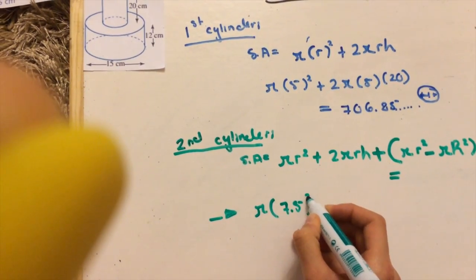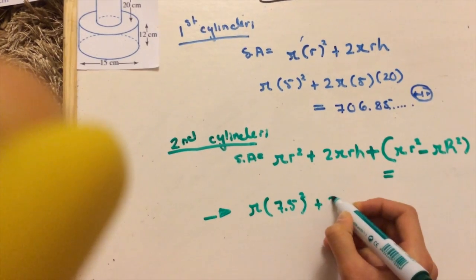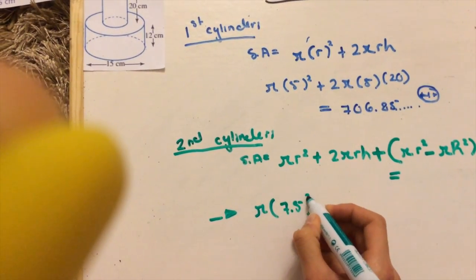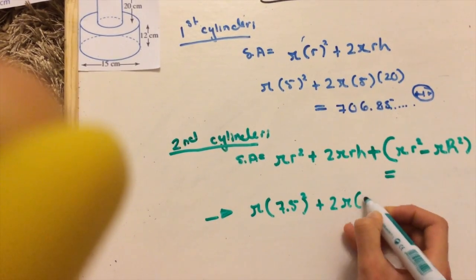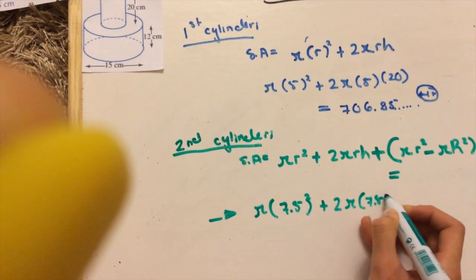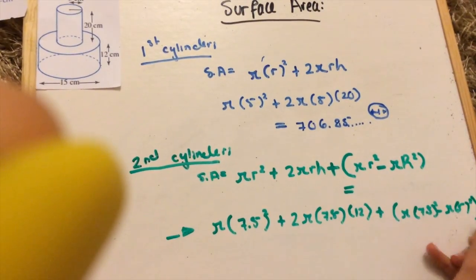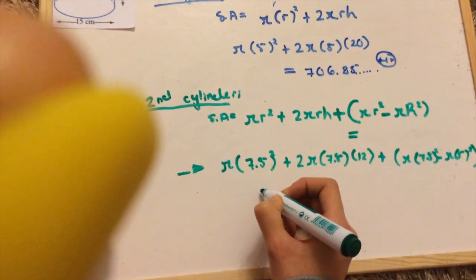First I'm going to substitute some real numbers as I did above. So the diameter given is 15, so half of that would be the radius, which is 7.5. And the height is 12 centimeters. My answer for the second cylinder is 840.37.